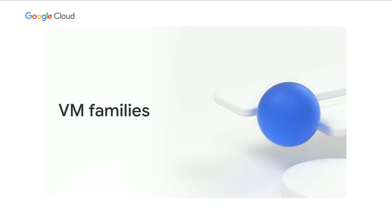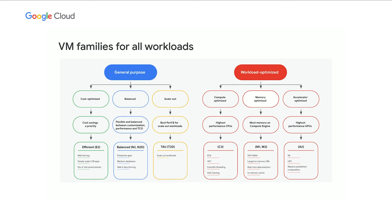Let's talk about VM Families. At the very highest level there are two categories: workload-optimized and general-purpose. For workload-optimized, there are three categories: compute-optimized for high-performance computing with heavier compute power; memory-optimized, or the M series of VMs, for high-end databases like SAP HANA with very high RAM configurations; and accelerator-optimized, which are GPU-enabled VMs for machine learning training and inference.